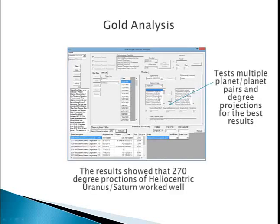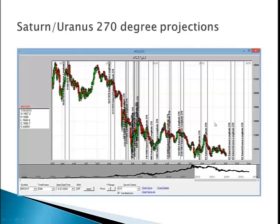As an example, this is a gold analysis. All these different planets and planet combinations — or planet pairs — were tested for increments of 30 degrees. It tested these multiple possibilities and came up with Saturn-Uranus longitude of 270 degrees with an 80% hit rate and an event count of 10. These are the projections shown on the gold chart, going out into the future.